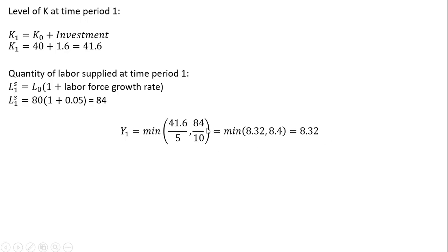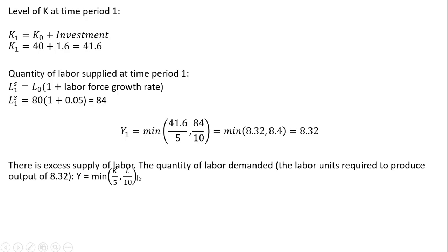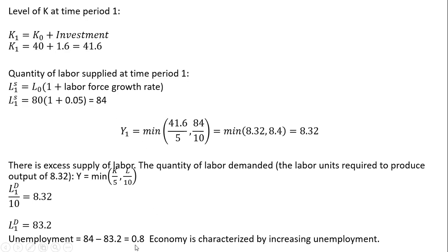This means we don't need to use 84 units of labor to produce 8.32 units of output, so there is an excess supply of labor. The quantity of labor demanded — the labor units required to produce 8.32 units — will be less than 84. Recalling our production function, we take L divided by 10 and set it equal to the output we're actually producing, 8.32. Solving for L: 10 times 8.32 gives a quantity of labor demanded of 83.2 units. So we have unemployment of 0.8 units (84 minus 83.2), and the economy is characterized by increasing unemployment.